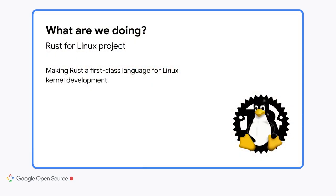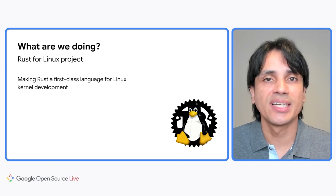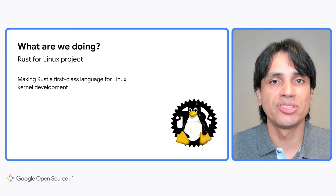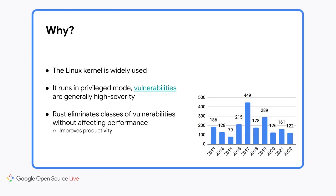What is it that we're doing? We're making Rust a first-class language for Linux kernel development. What I mean by that is we want Rust to be fully integrated into the build system, the testing tools, integration, and all infrastructure related to the development of Linux kernel modules. The idea is that eventually we'll get to a state where a developer can decide which language they want to use — they can pick C or they can pick Rust for their new projects. And a natural question that follows is: why would we want to do that, given that C has been used successfully for over 50 years to develop kernels?